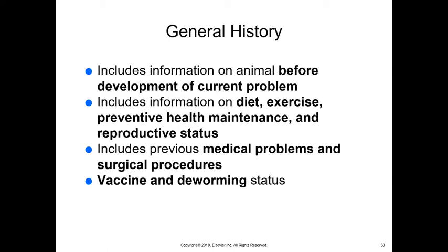Then we move on to including information on the animal before the development of the current problem: their diet, exercise, preventive health maintenance, and reproductive status. This includes previous medical problems and surgical procedures, and also vaccine and deworming status.